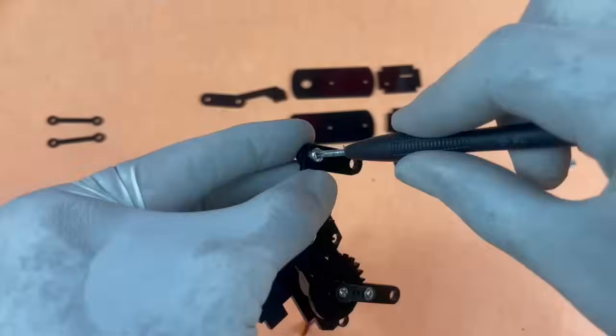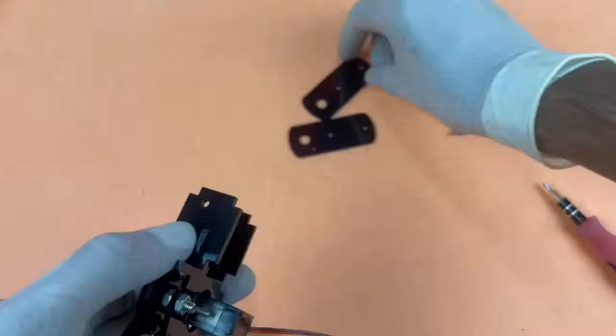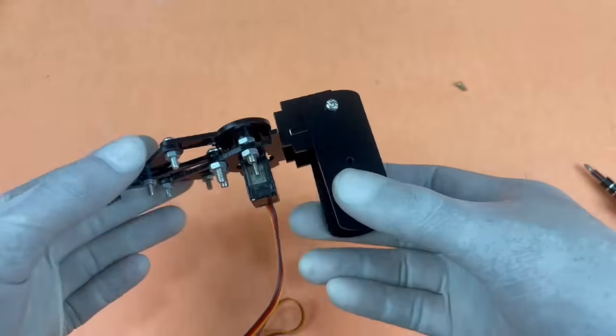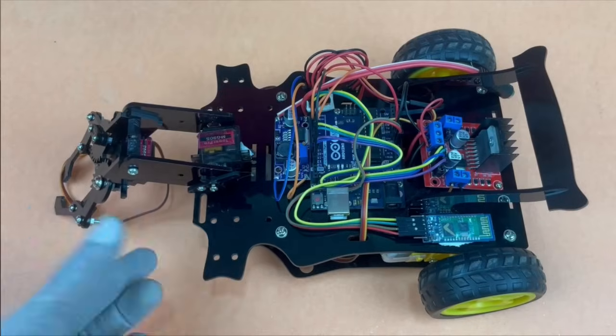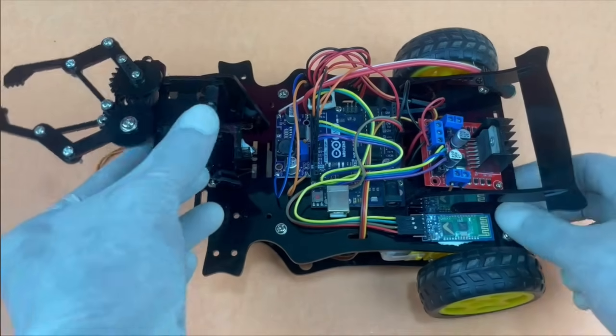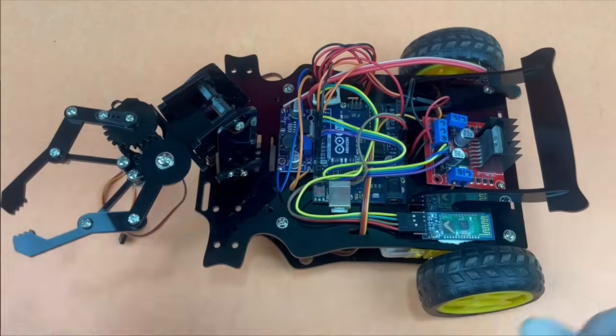Once the parts were cut we assembled the robotic arm using the required nuts, bolts and spacers. And just like that our miniature robotic arm is ready. Now we didn't get this working in the first try and we had to go through a lot of failed iterations to get this one working, but the final one seems to have no problems with gripping stuff and lifting it with ease.